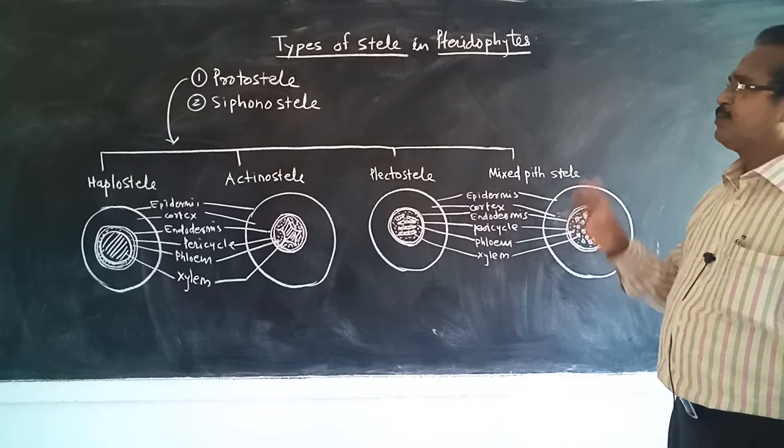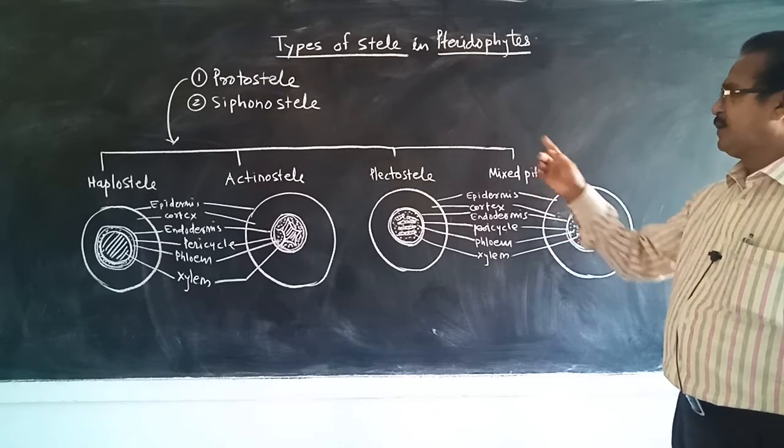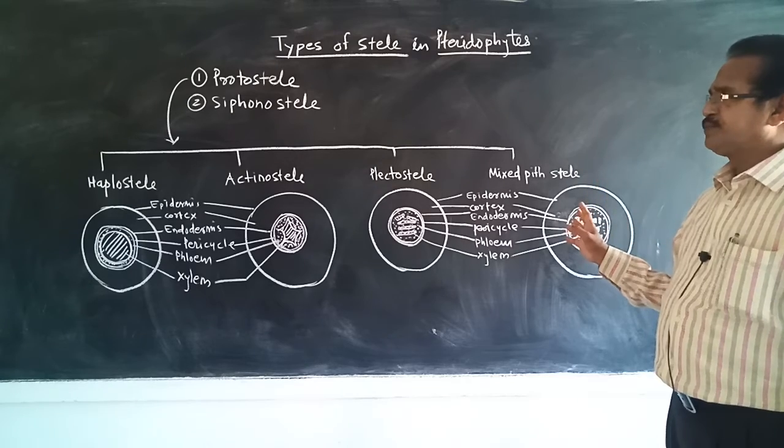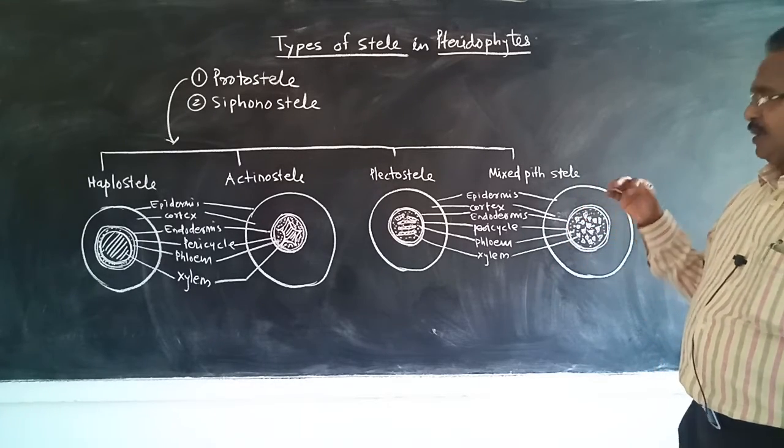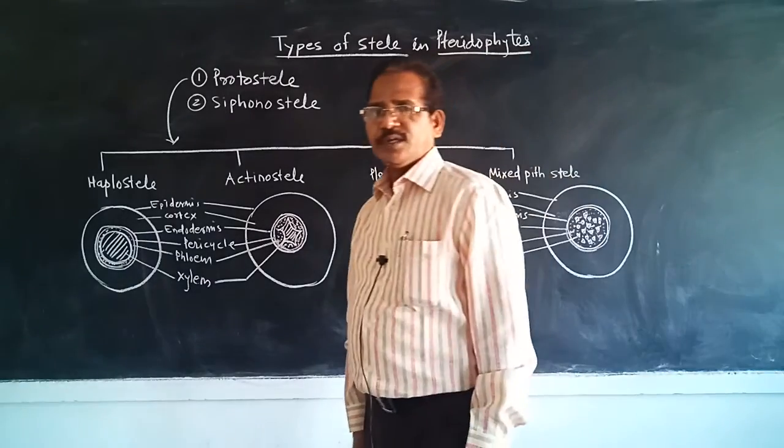In this manner, there are four subtypes of protostele: haplostele, actinostele, plectostele, and mixed protostele. The second subtype, that is siphonostele, we will study tomorrow. Good luck.